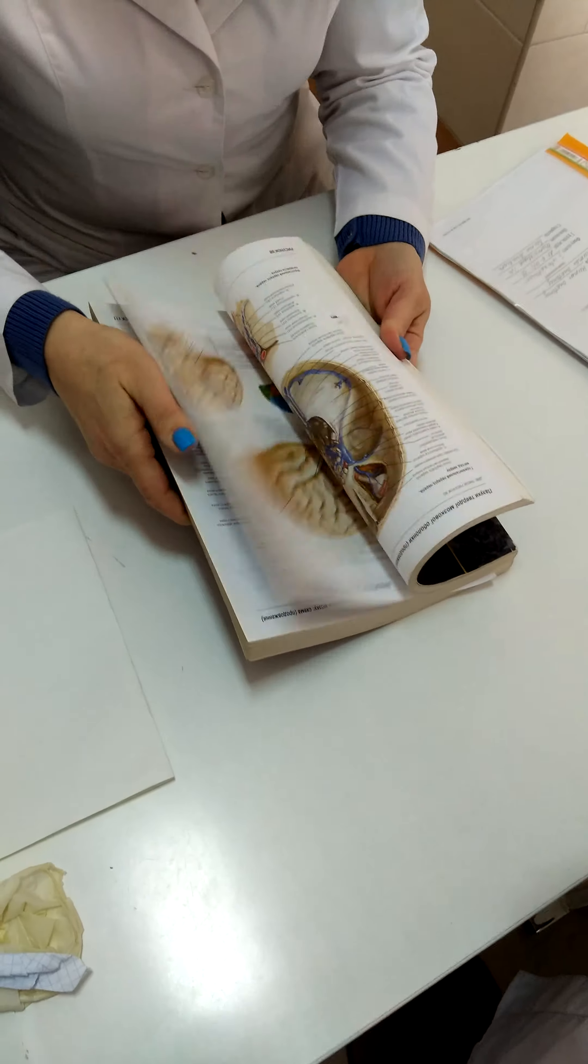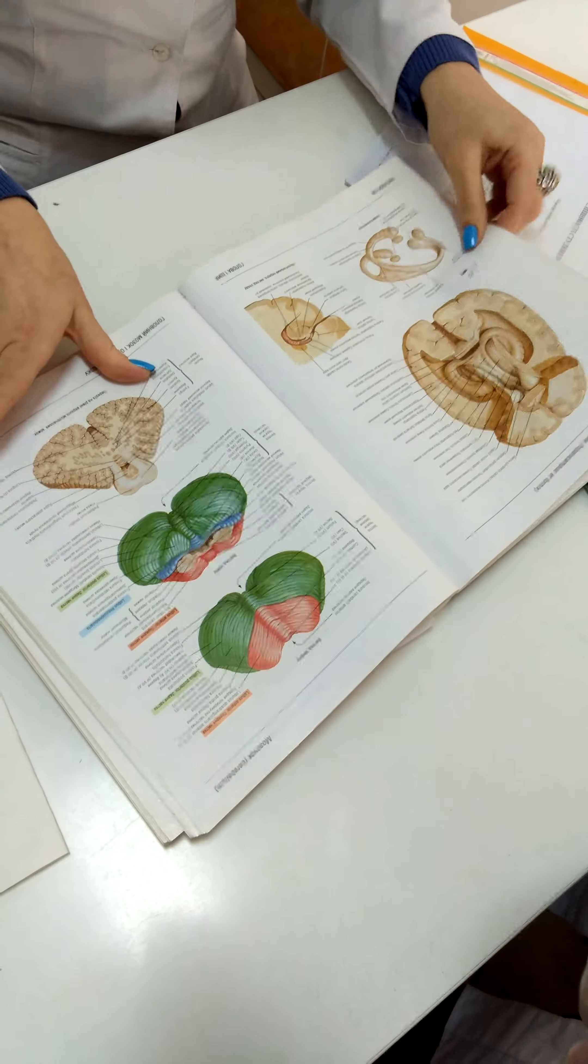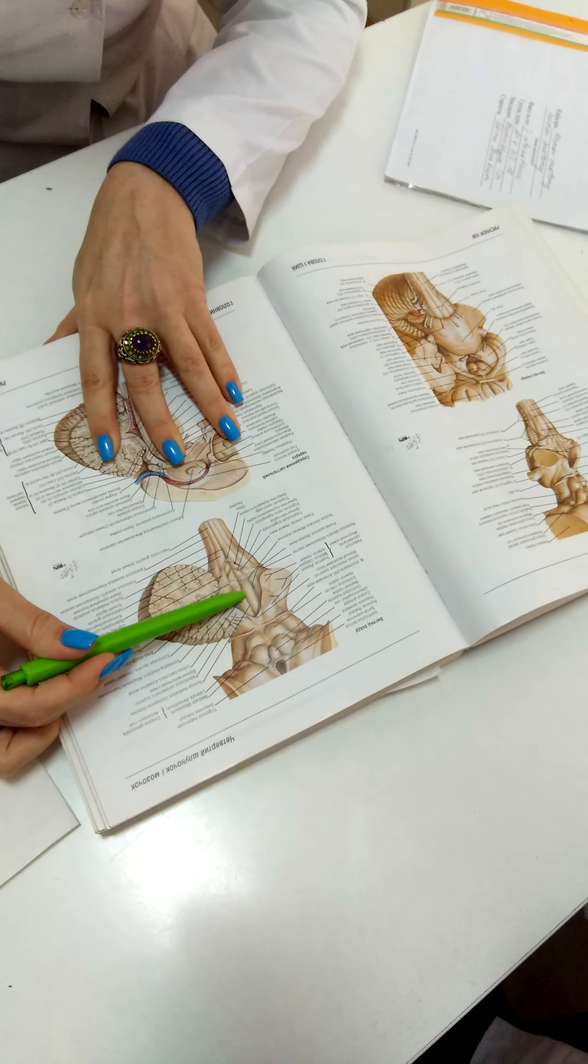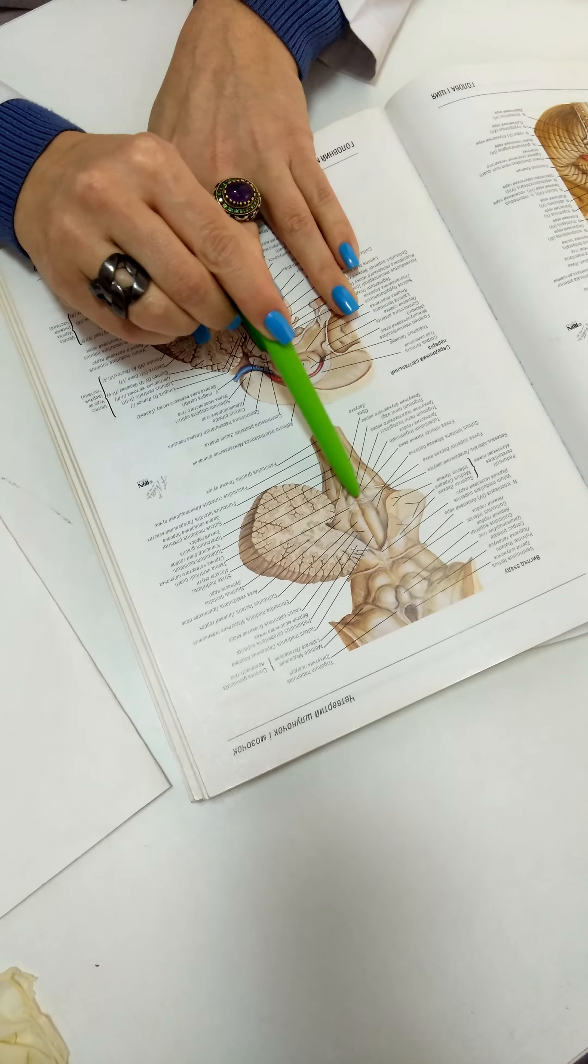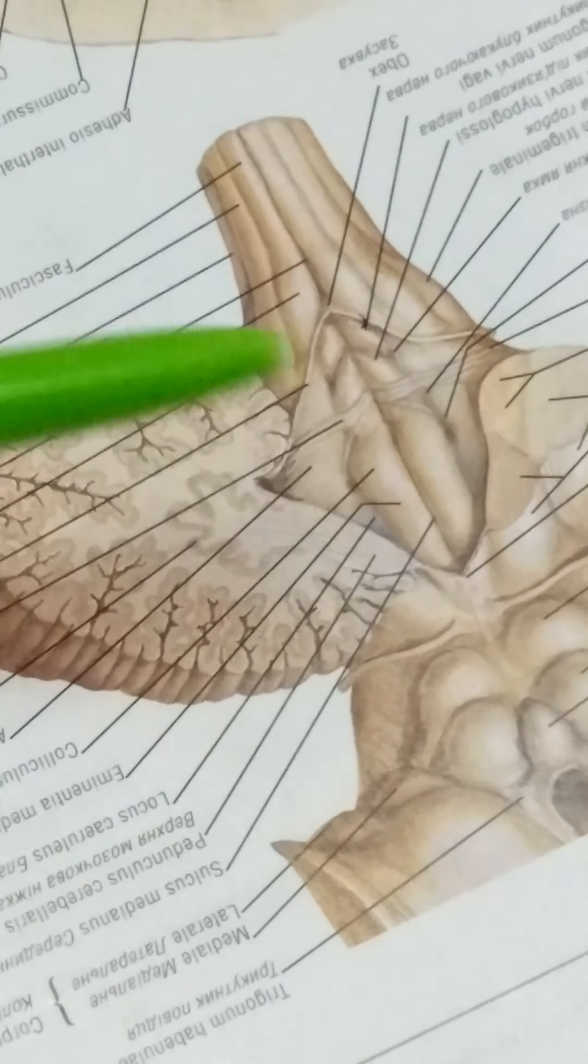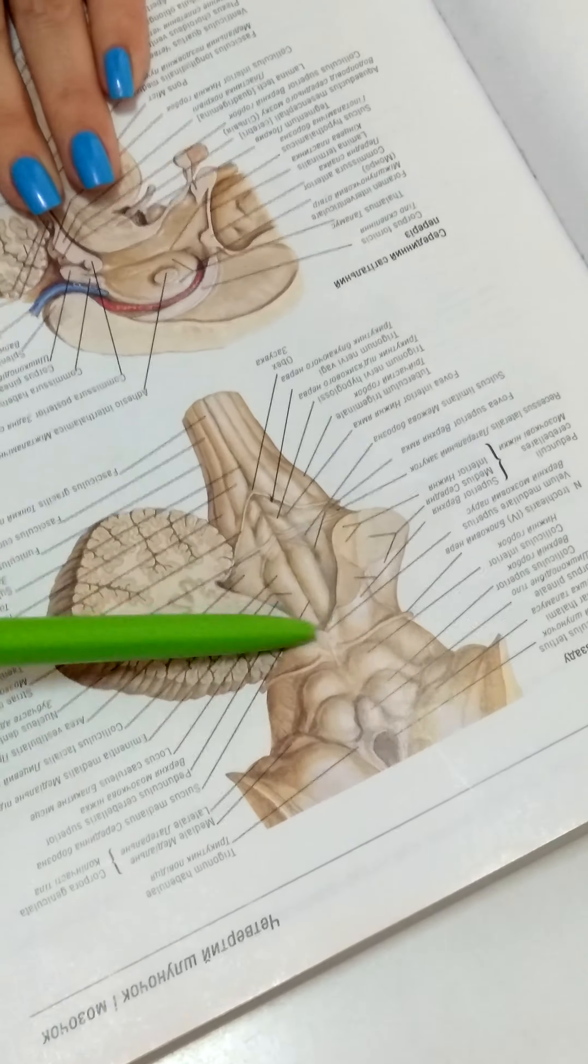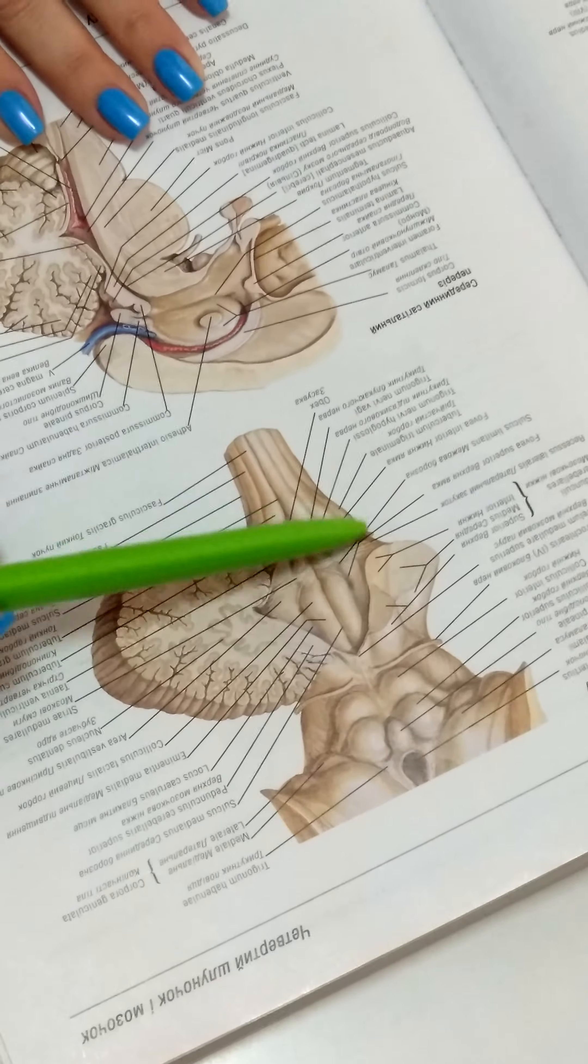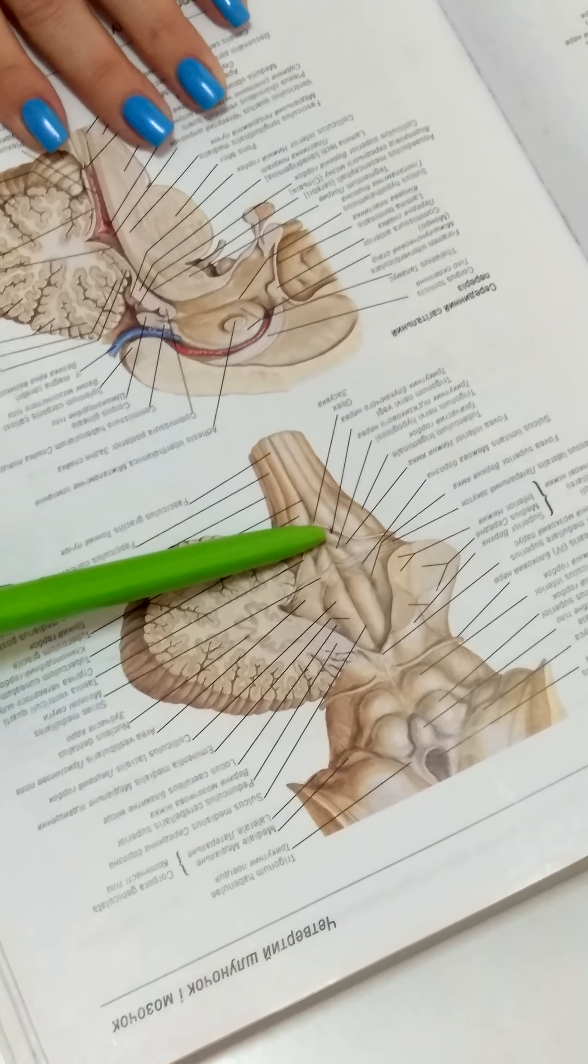The relief of rhomboid fossa includes sulcus medianus and striae medullaris - fibers of white matter which have horizontal direction and separate rhomboid fossa into two triangles. The upper triangle is the dorsal surface of pons. The lower triangle is the dorsal surface of myelencephalon or medulla oblongata.